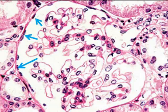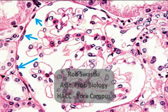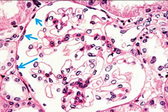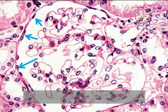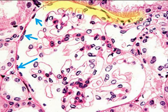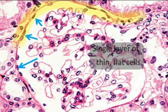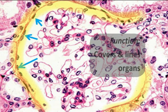Hello everybody, this is Rob Swatsky and this screencast is a review of histology. Let's begin with epithelial tissue. We're looking at simple squamous epithelium — this is a very thin, flat tissue covering and lining organs such as the blood vessels.